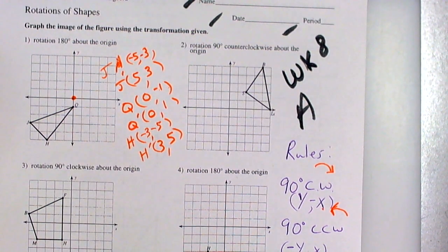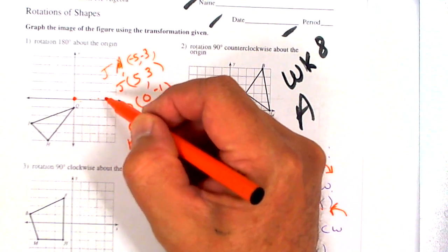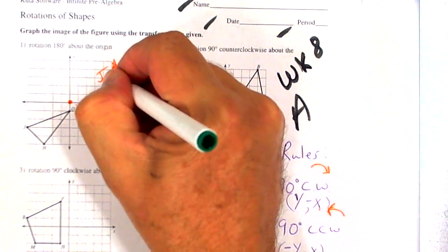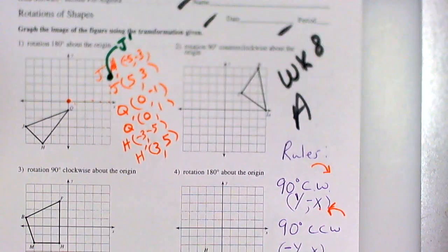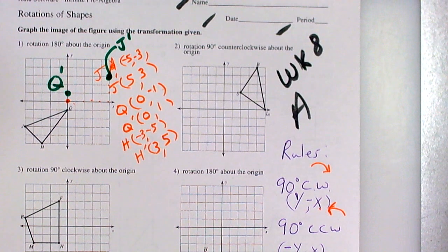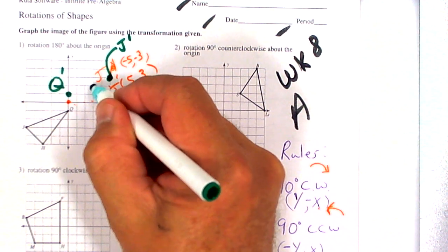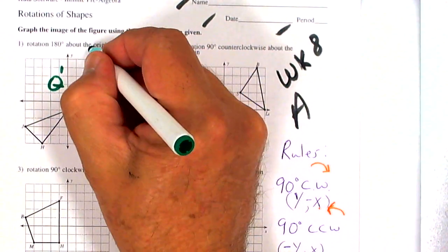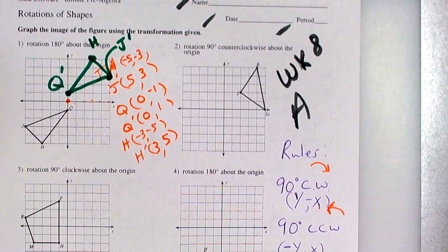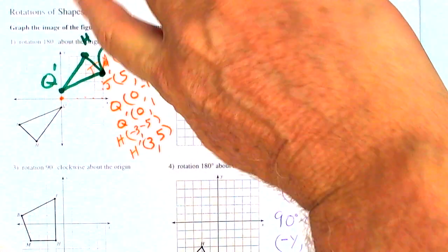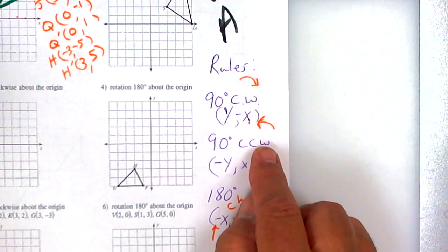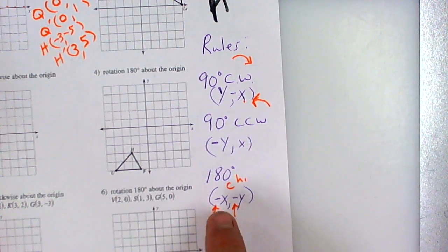Let's graph these primes in green. J prime is at five, three — right there. Q prime is at zero, one — right here. H prime is at three, five — up here. So if you take this triangle and rotate it 180 degrees, either clockwise or counterclockwise, about the origin, it looks like that. To summarize: for clockwise, switch and change the x; for counterclockwise, switch and change the y; for 180°, don't switch but do change both — positive becomes negative, negative becomes positive.